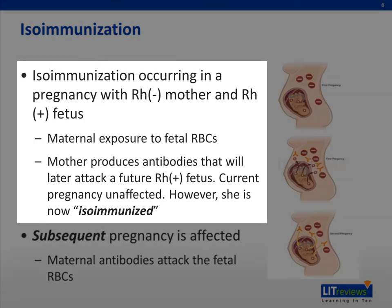Isoimmunization is a process that occurs when the maternal immune system is exposed to a foreign antigen, therefore creating antibodies to the specific antigen. This is clinically pertinent to a pregnancy in which the mother is exposed to a new antigen that the fetus expresses, specifically when the mother is Rh negative and the fetus is Rh positive. Maternal exposure to fetal blood containing the Rh antigen can cause the mother to produce antibodies against the Rh antigen of the fetal red blood cells. This process is called isoimmunization.